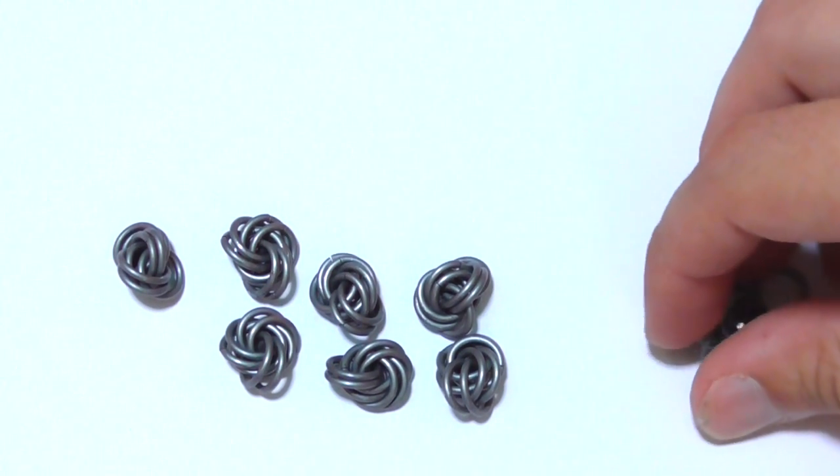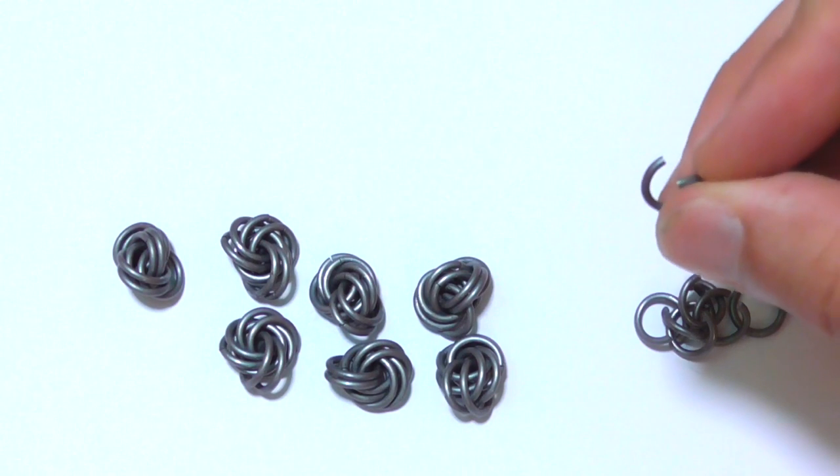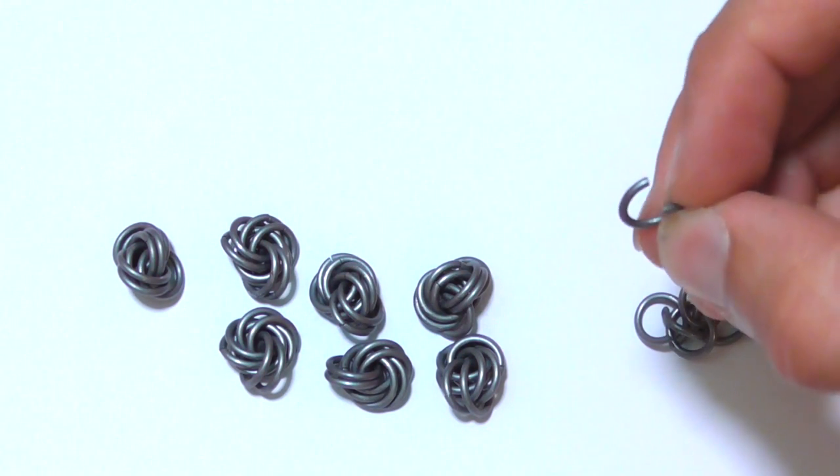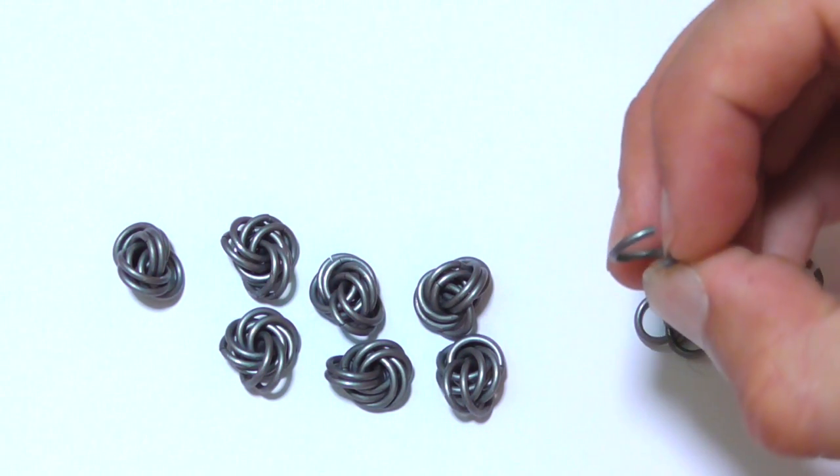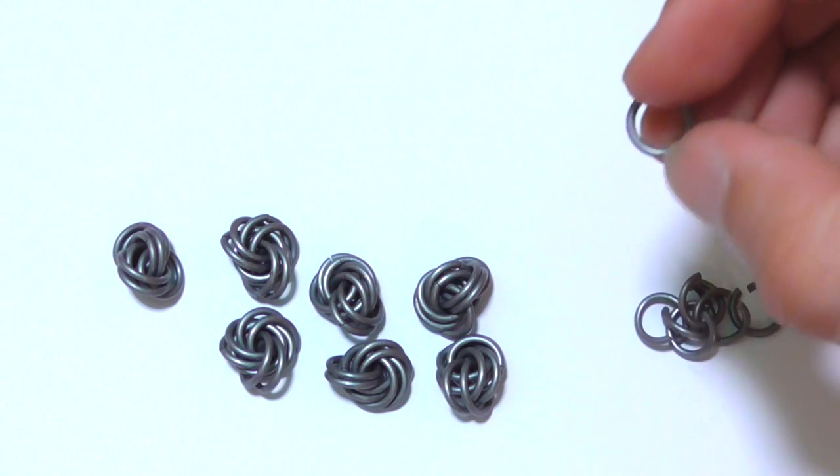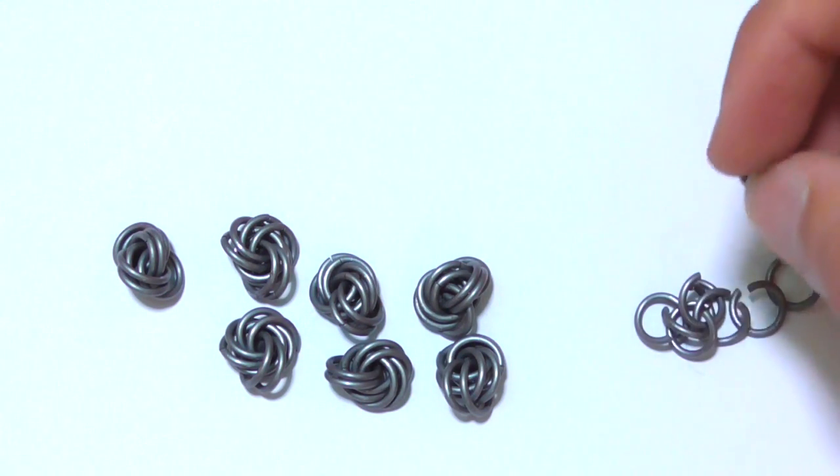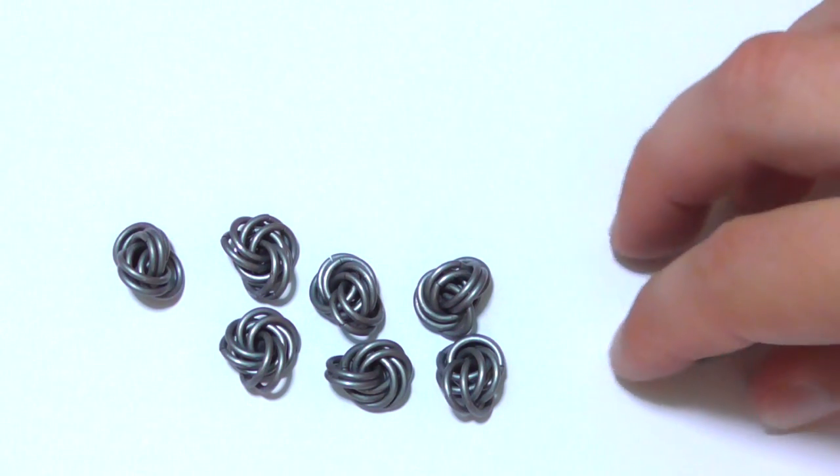For the bracelet we will need seven knots, and for each knot we will need eight rings. I use rings made of zinc plated wire with a diameter of 1.4 millimeters, inner diameter of the rings seven millimeters, and I have to mention that for this weave the best AR is five.